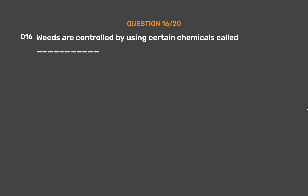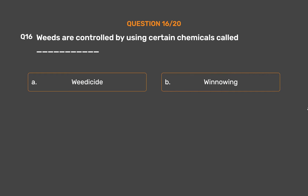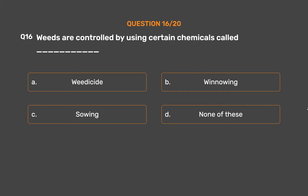Question No. 16: Weeds are controlled by using certain chemicals called ___. Option A: Weedicide. Option B: Winnowing. Option C: Sowing. Option D: None of these.